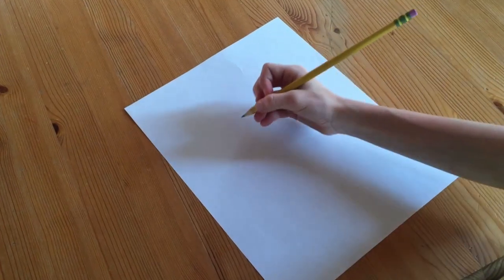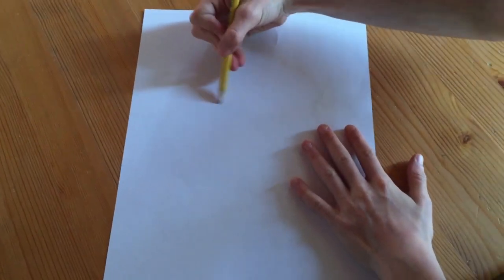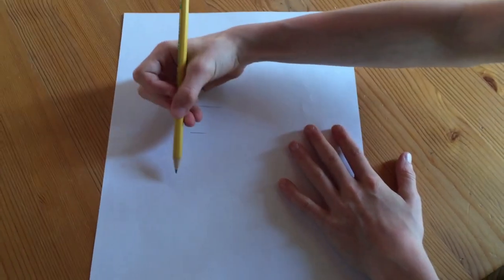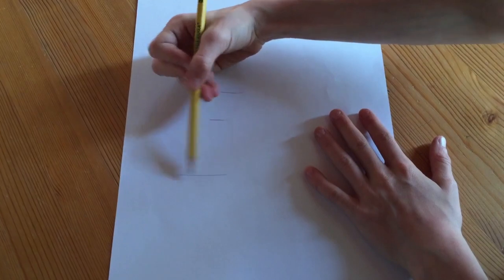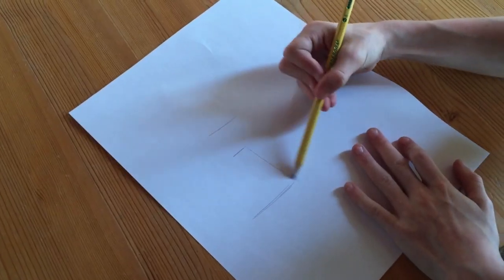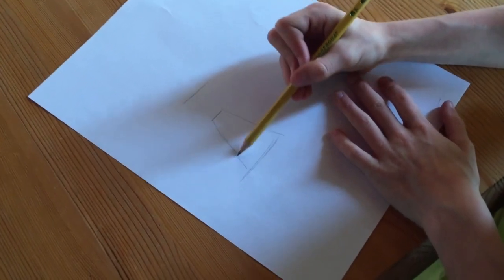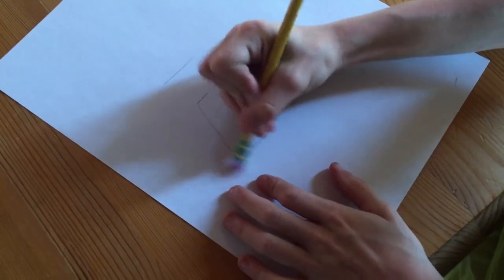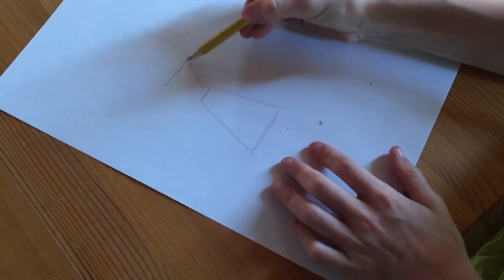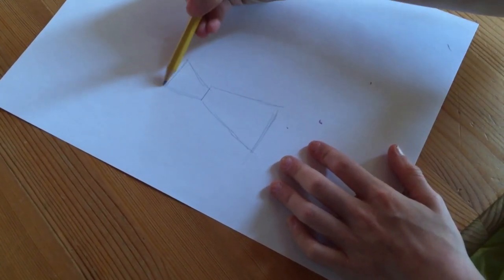So first, the first step is to draw three lines for shoulder, waist, and the end of her dress. And then you just connect them all. There's a lot of erasing in this, you have to erase a lot, so make sure you have a pencil.